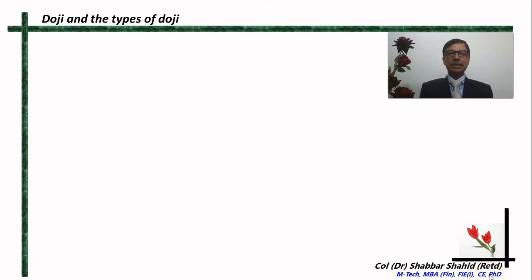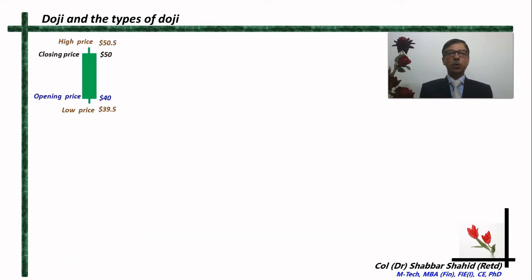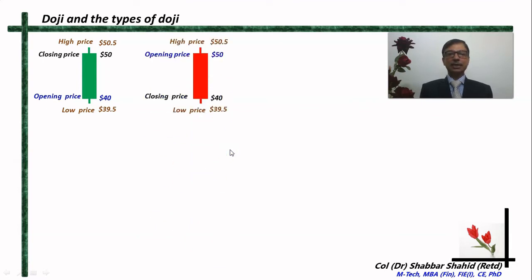So far we have completed learning six bullish reversal patterns and six bearish reversal patterns. By now we are so familiar with the candlestick that just by looking at one we can comprehend what it is conveying. When you look at a green candlestick you immediately understand that the closing price is higher than the opening price, the tip of the upper shadow indicates the high price, and the tip of the lower shadow indicates the lowest price of the range. When you see a red candle, the closing price is below the opening price, and the upper and lower shadows indicate the high and lowest prices of that range.